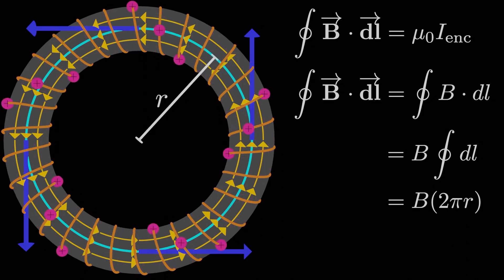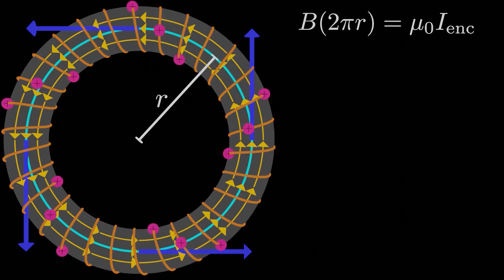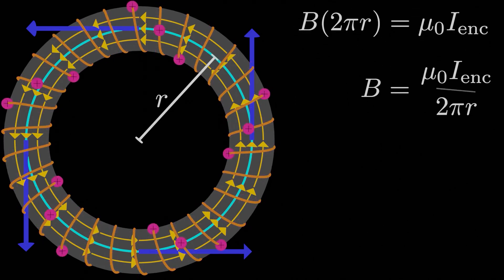By Ampere's law, we can set B times 2πr equal to μ₀ times the current enclosed by our Ampere loop. Dividing by 2πr, we're one step away from the answer. All we need to figure out is what I_enclosed is.